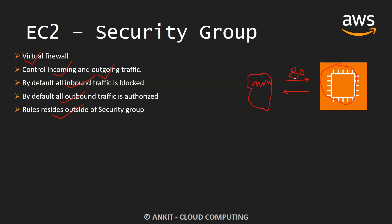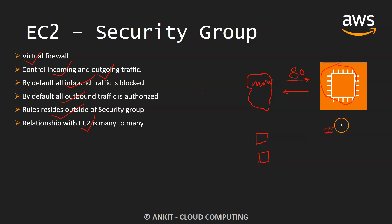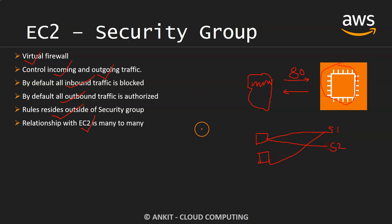The relationship between security groups and EC2 is many-to-many. One security group can be attached to multiple EC2 instances, or one single EC2 instance can be connected with multiple security groups also.